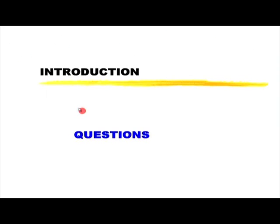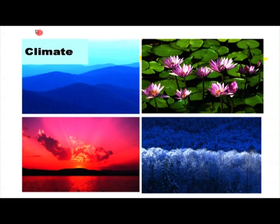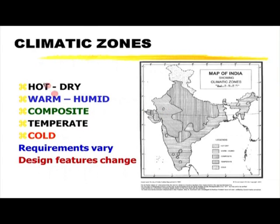I begin with some questions. You want to design a building — where are you? Madam Monica introduced you to the climate concept. Would you copy the design meant for a particular climate? No, because these are the climatic conditions in India. There are five climates: hot and dry, warm and humid, a large chunk is composite, some isolated pockets of temperate climate, and the north part is cold. The requirements vary and therefore our design features will change. We cannot copy a design from one place to another.